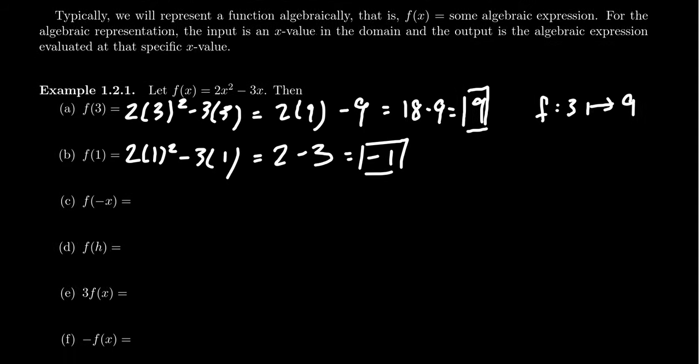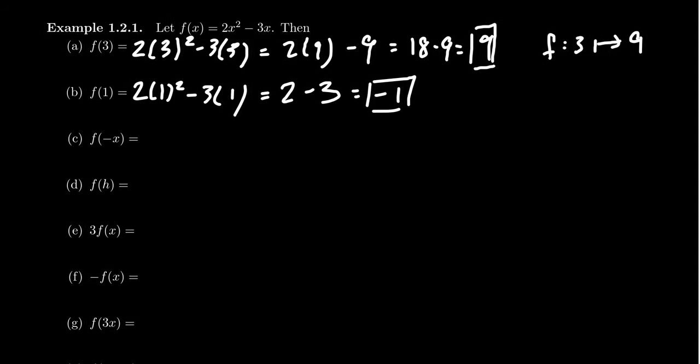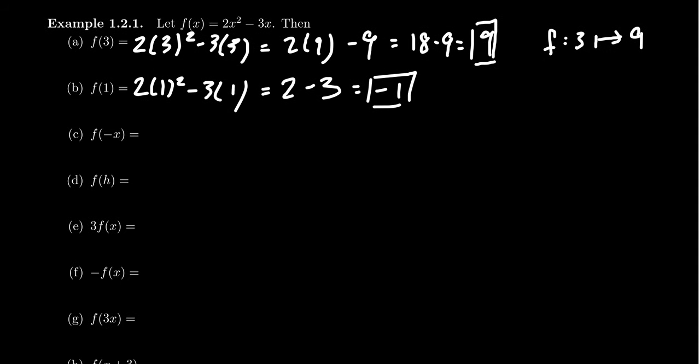Now one nice thing about these algebraic functions is that we can evaluate the function at specific numbers in its domain, like 3 and 1. But we can also evaluate these functions at other expressions themselves. Like we can look at f(-x). What does that mean? f(-x) would mean you're going to take the function f(x) from above and everywhere you see an x, you're going to instead substitute in a negative x.